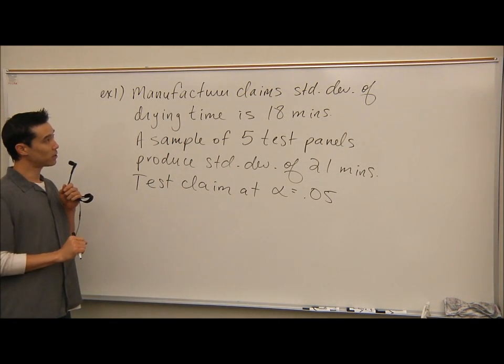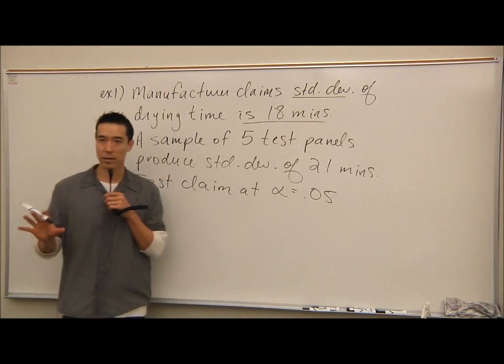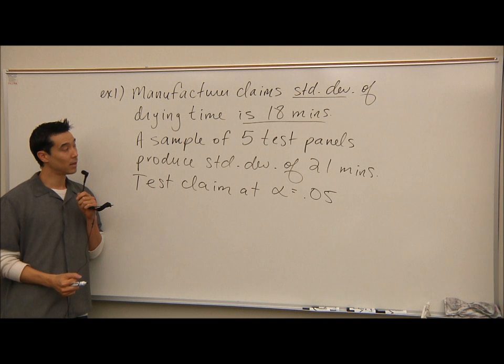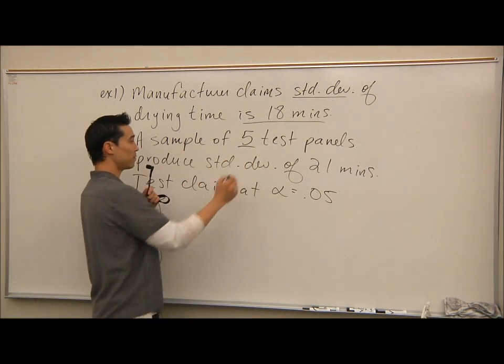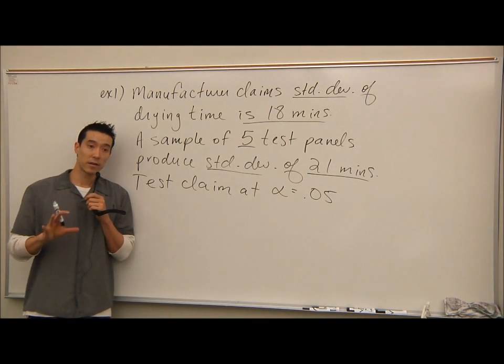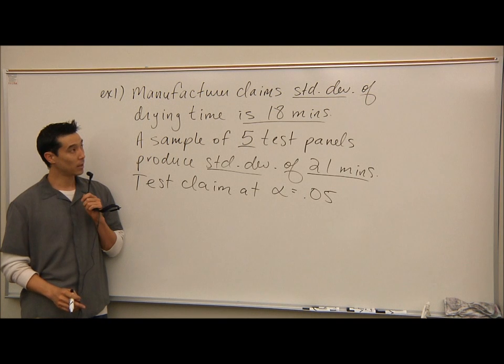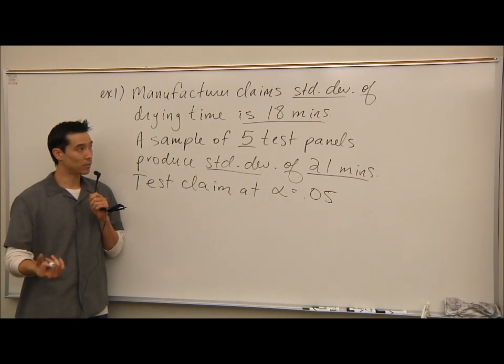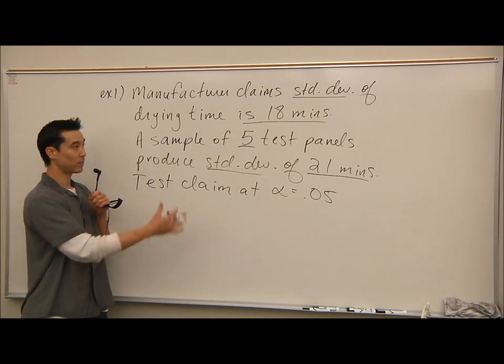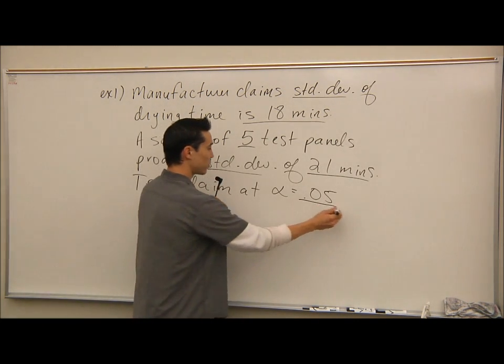First thing is the sentence the manufacturer claims the standard deviation is 18 minutes. So hopefully just looking at that sentence, it's pretty clear that we're talking about the standard deviation in the claim itself. And as we read further, we did a sample of five and that produces standard deviation of 21 minutes. So there's nothing about the mean here, nothing about the average, nothing about proportion. It's specific standard deviation and then again standard deviation. And as we're moving on to the new chapter, all of the stuff in the new chapter is two samples. So it should be clear in this example, there's one sample, right? We just had one sample of five and we have results from that. Then test the claim at alpha equals 0.05.